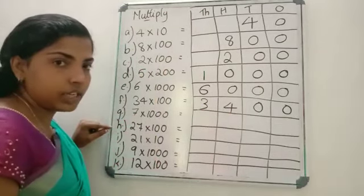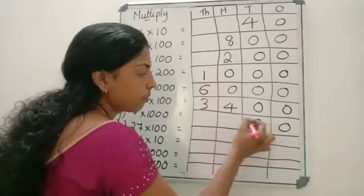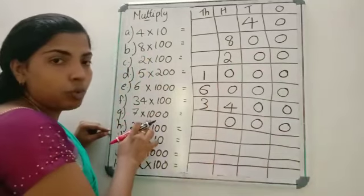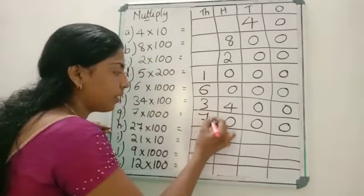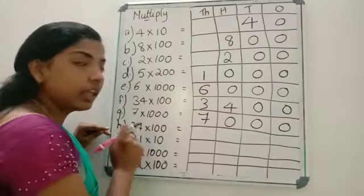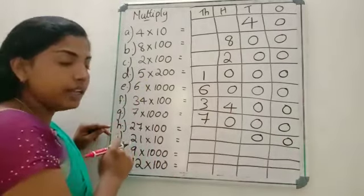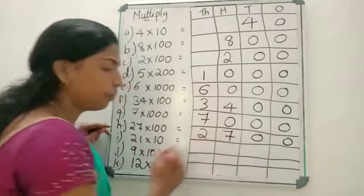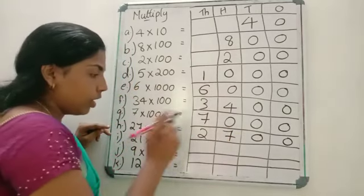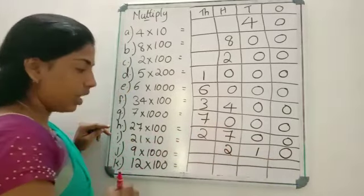Next: 7 into 1000. Can you say what is 7 into 1000? First write the 3 zeros, starting from the 1's place. Then 7 into 1 — any number into 1 is that number itself, that is 7. So the answer is 7000. Next: 27 into 100 — how many zeros? 2. Then 27 into 1 is 27 — it's 7 here and 2, so the answer is 2700. Next: 21 into 10 — 1 zero. 21 into 1 is 21 itself, so the answer is 210.